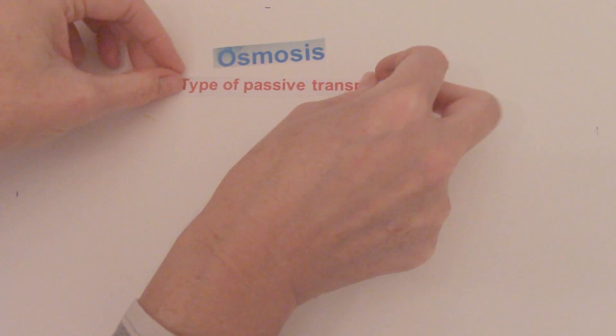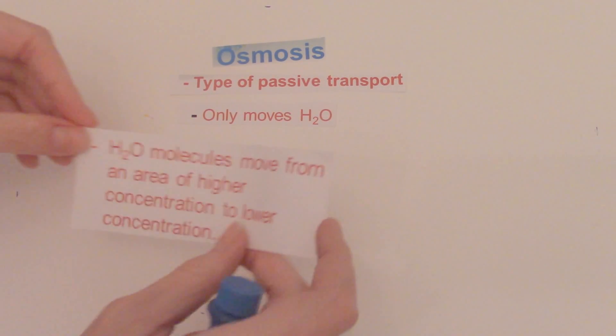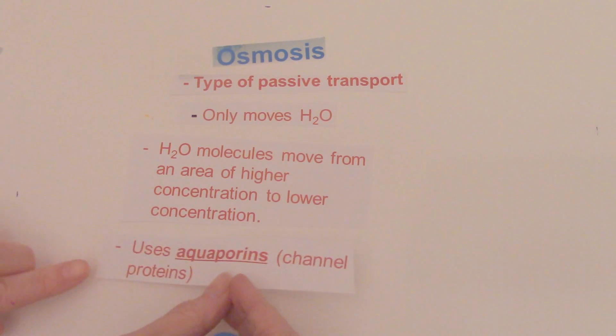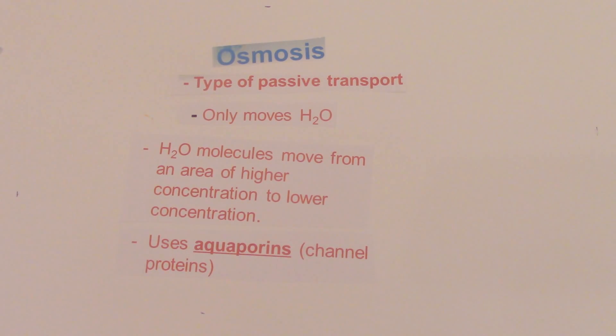Our third type of passive transport is osmosis. When we say osmosis, you need to remember water. Osmosis is a type of passive transport, but it only moves water. It moves water molecules from an area of high concentration to low concentration, and it needs to use special protein channels called aquaporins. Osmosis needs aquaporins to move water molecules — only water molecules — across the cell membrane from an area of high concentration to low concentration. This does not use the cell's energy.